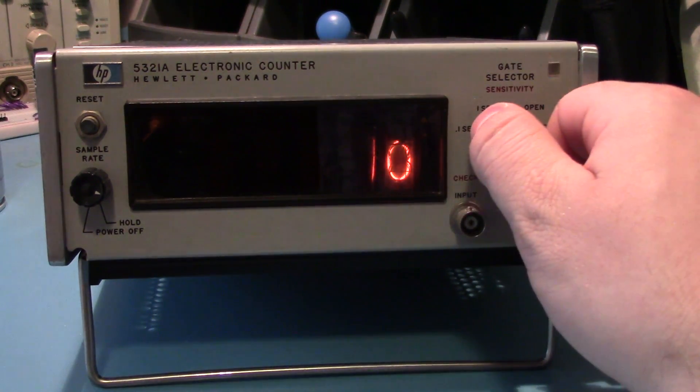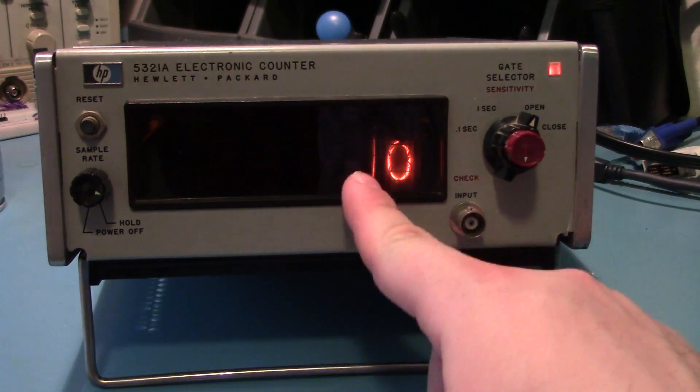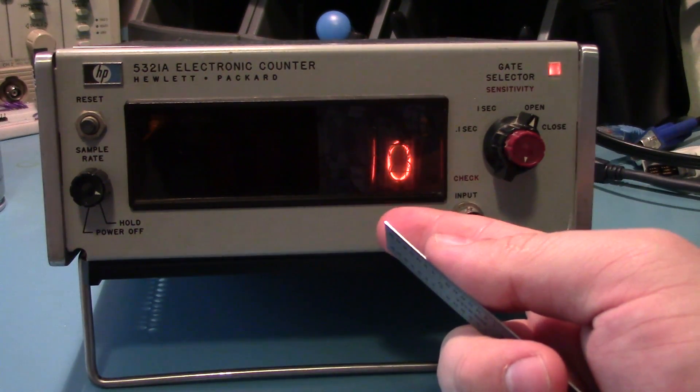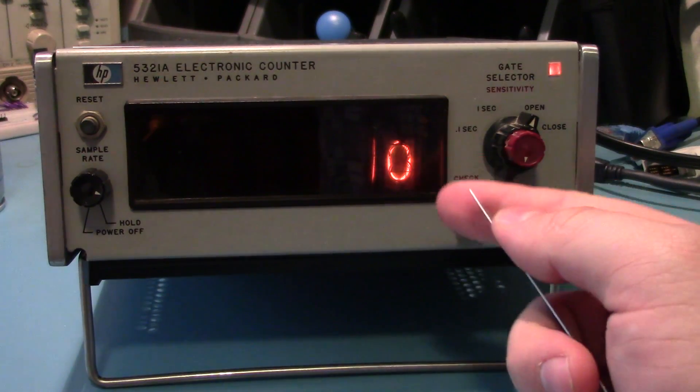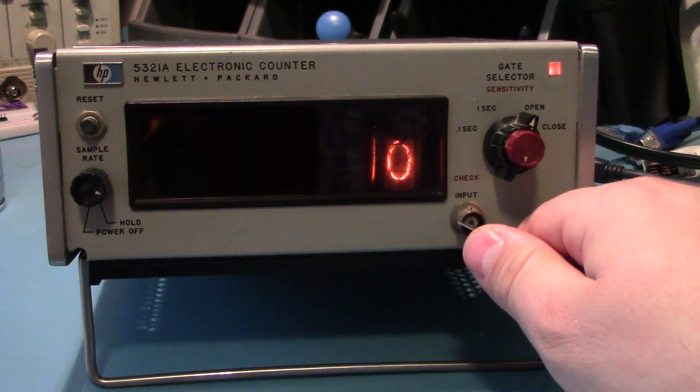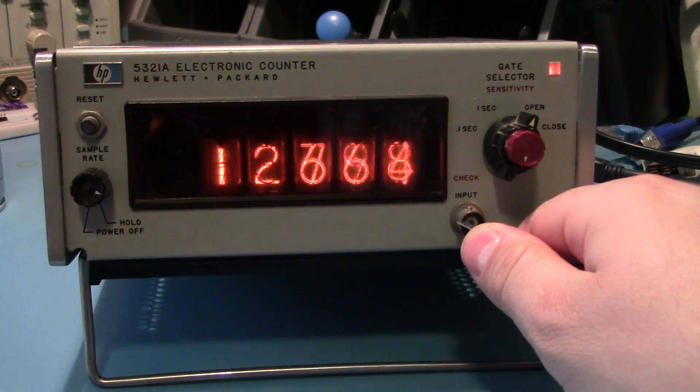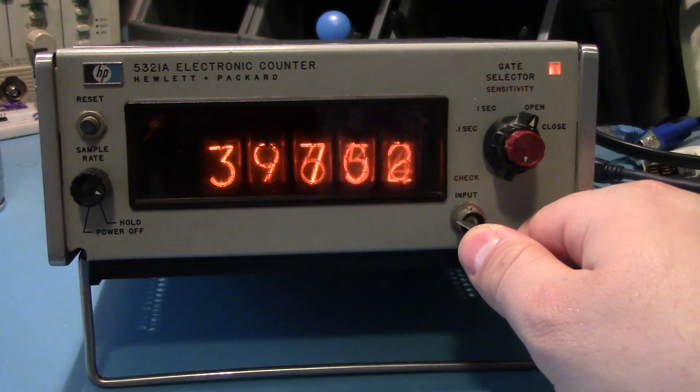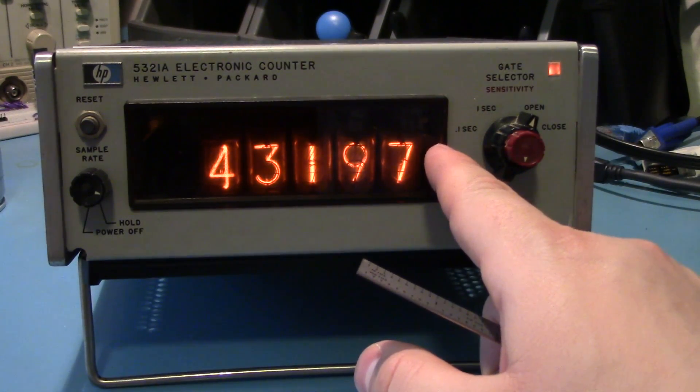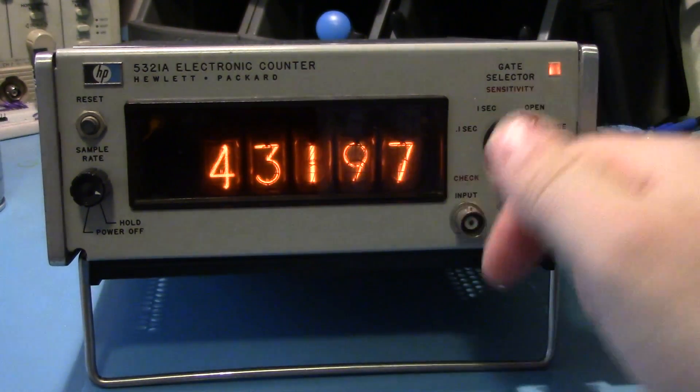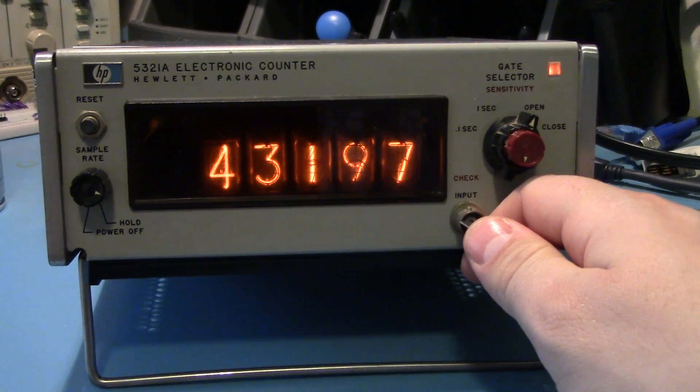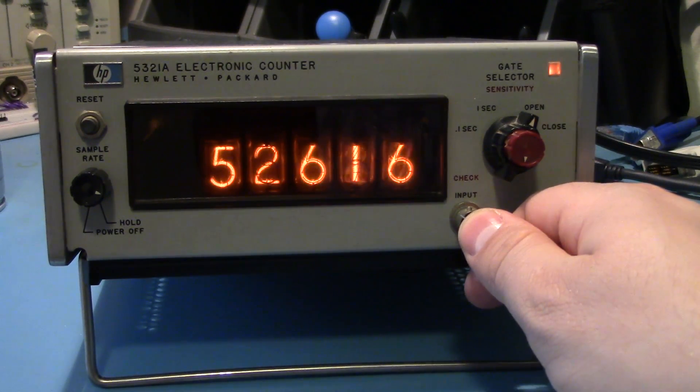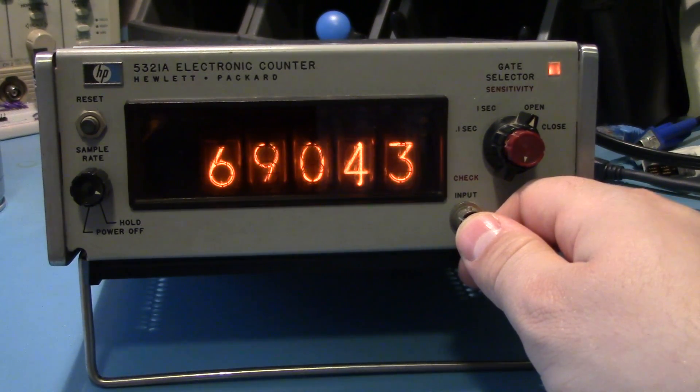Because frequency counters are generally a lot more useful. They both do basically the same thing. The main difference being, let's say you're running a one megahertz signal into this, this would be incrementing up like this and not show one megahertz. It would be counting all of the pulses where a frequency counter would show one megahertz and that's it. It would just tell you what it's being sent over a given time, the current frequency. Whereas this counts over time how many individual pulses that signal has made.